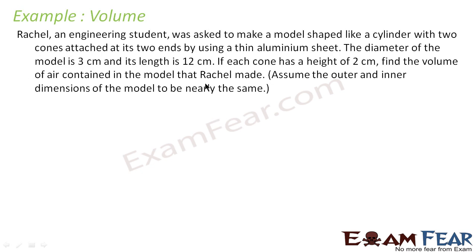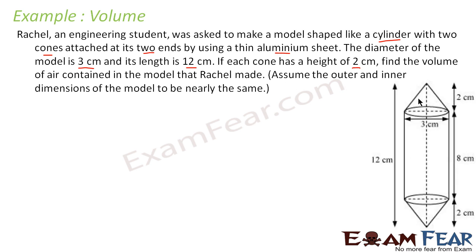Let's take another example. Rachel, an engineering student, was asked to make a model shaped like a cylinder with two cones attached at the two ends using an aluminum shape. The diameter of the model is 3 cm and the total length is 12 cm. If each cone has a height of 2 cm, find the volume of air contained in the model. This is a cylinder with two cones attached at the two ends.